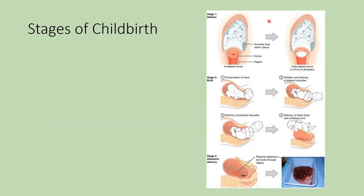This shows the stages of dilation — here is the undilated cervix, and here it is fully dilated to allow childbirth to proceed without complications. If the newborn is not in the head-down position — for example, if it is feet first, that is called breech. Sometimes they can try to help turn the fetus, and oftentimes it will turn naturally. If not, they may have to perform surgery.